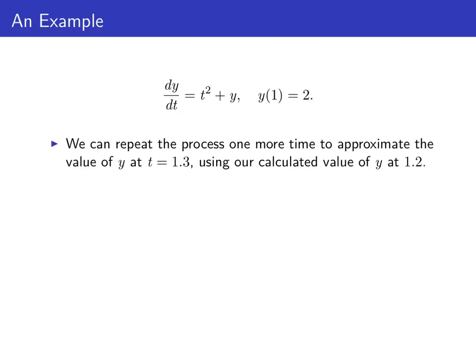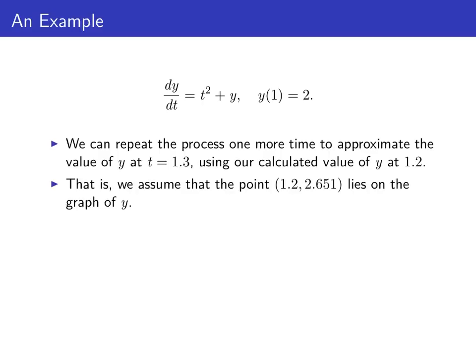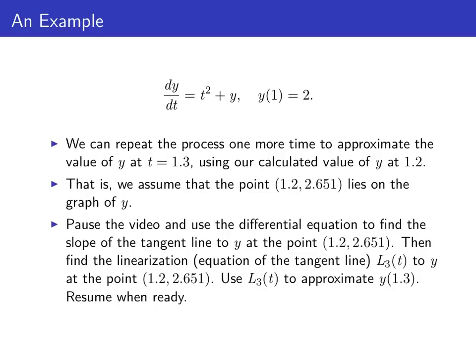Euler's method is an iterative process — we keep repeating the same thing over and over again. So let's do it one more time to approximate y(1.3), using our calculated value of y at 1.2. The point (1.2, 2.651) probably doesn't lie exactly on the graph of our solution, but it's pretty close, so let's assume that it does. Pause the video, use the differential equation to find the slope at (1.2, 2.651), then find the linearization L₃ at that point, and use L₃ to approximate y(1.3).